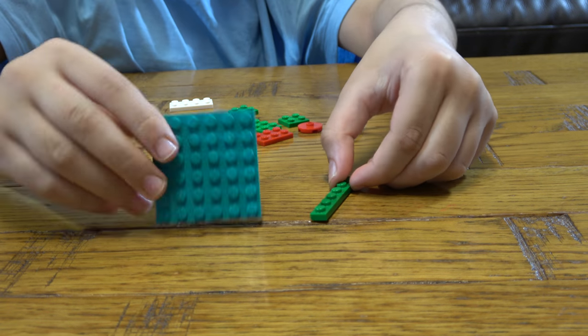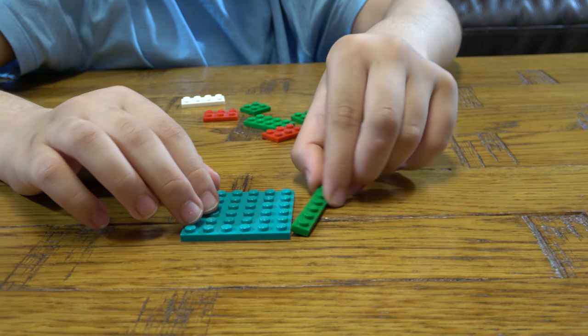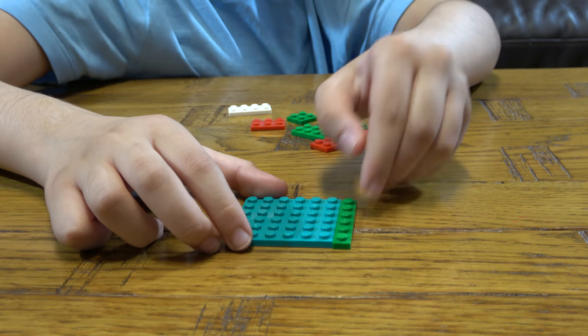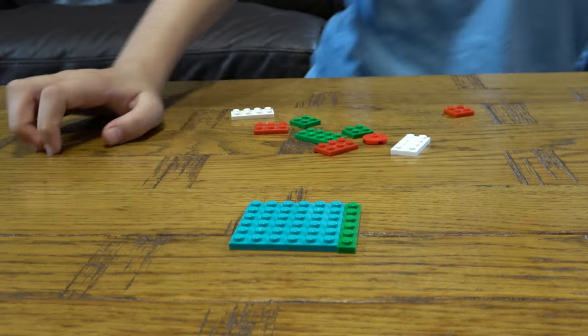The first thing we're gonna do is get this base plate. You could get a two by six. I just got a one by one for no reason, but yeah.